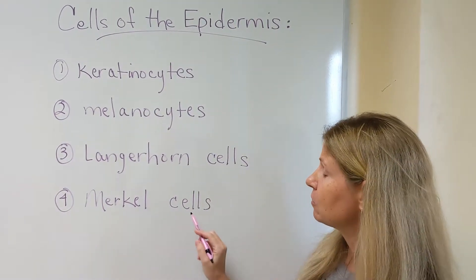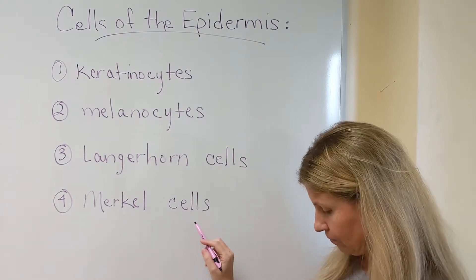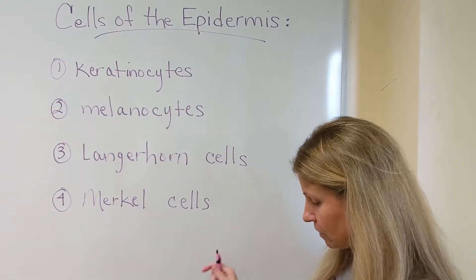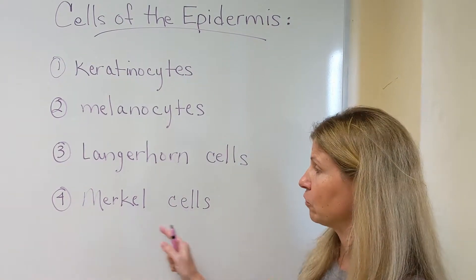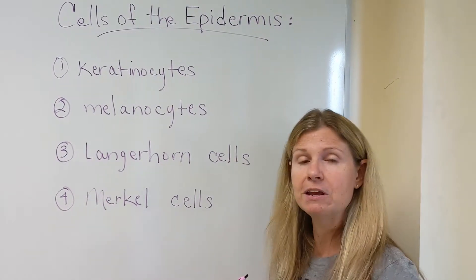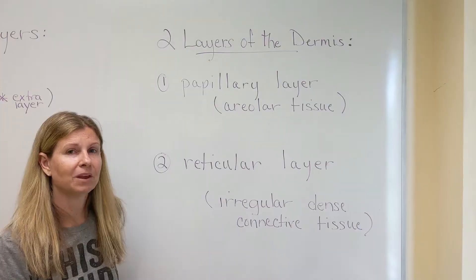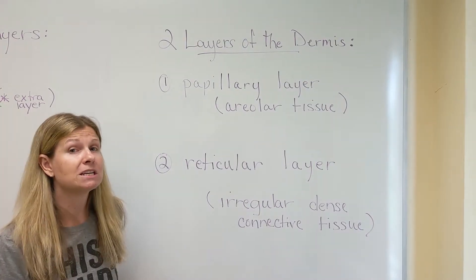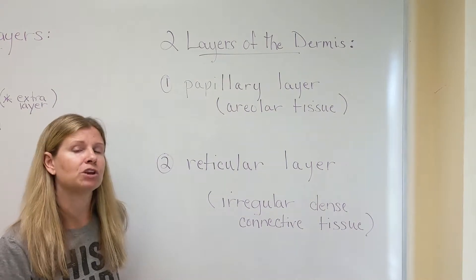The last and final type of cell is the Merkel cells. These detect light touch, which is why they're very close to the surface in the epidermis layer. We're going to continue on with the next layer of skin, the dermis, found just underneath the epidermis.